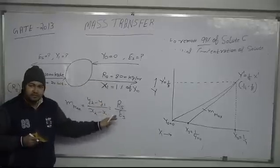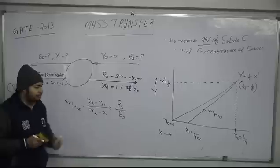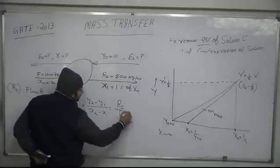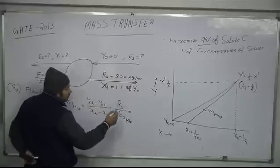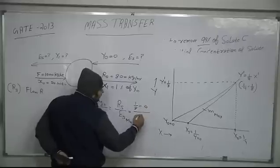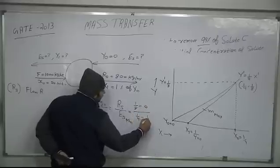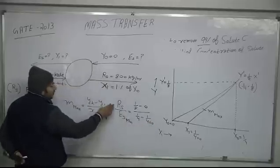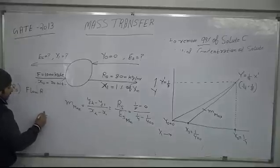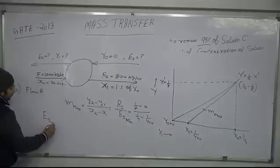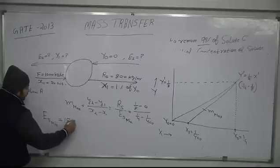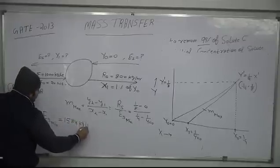For the slope to be maximum, ES has to be minimum. To find ES minimum, we use: (Y2 - Y1) / (X0 - X1) = (1/8 - 0) / (1/4 - 1/400). Solving this, ES minimum comes out to be 1584 kilograms per hour.